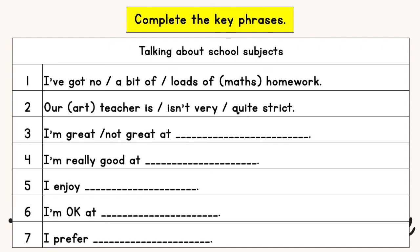Complete the key phrases — talking about school subjects. Let's go through the statements first. I've got no / a bit of / a lot of maths homework. Our art teacher is / isn't very / quite strict. I'm great / not great at which subject. I'm really good at which subject. I enjoy which subject. I'm okay at / I prefer. You have to watch a video and complete the key phrases using the school subjects. Get ready? Let's watch.